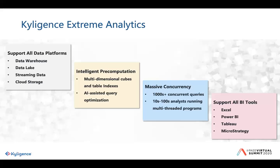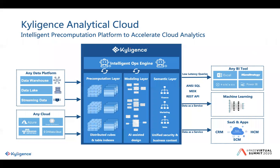I'm going to show you a little bit about our architecture so you can get to know how it works. You can see what we just talked about: any data platform on any cloud. Today I'm going to be showing you Azure cloud and we're going to be running on Snowflake as our data platform. On the right, you can see that we connect to any BI tool. We play a lot in machine learning and SaaS and CRM type software apps.